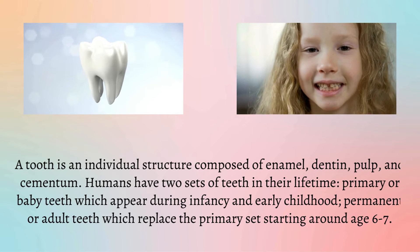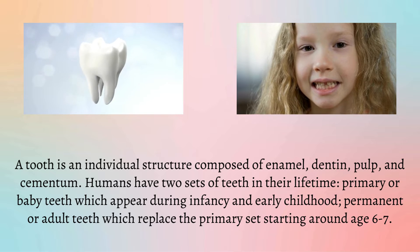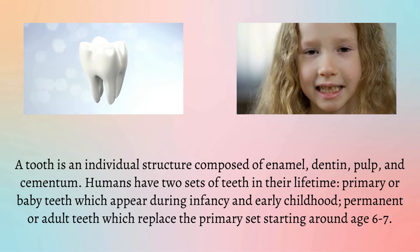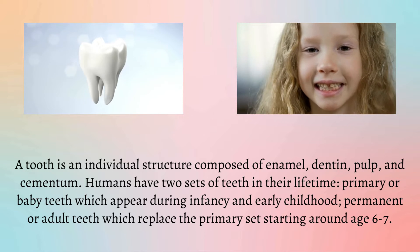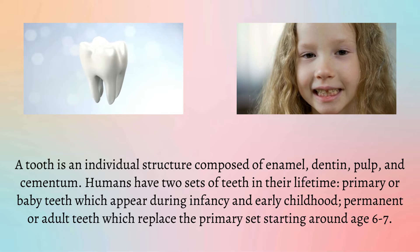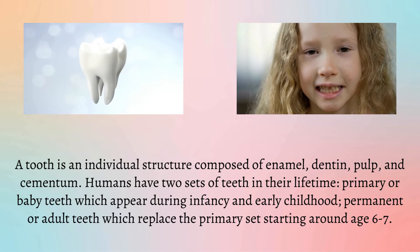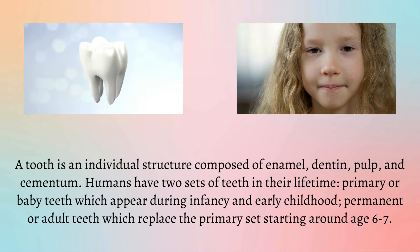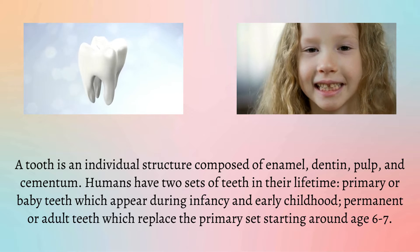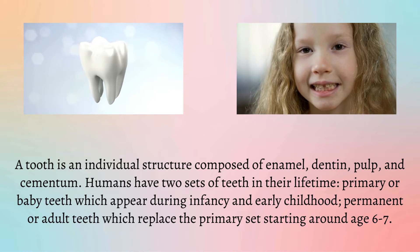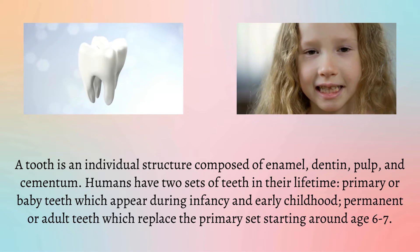A tooth is an individual structure composed of enamel, dentin, pulp, and cementum. Humans have two sets of teeth in their lifetime: primary or baby teeth, which appear during infancy and early childhood, and permanent or adult teeth, which replace the primary set starting around age 6 to 7.